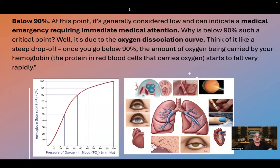Below 90% is generally considered low and can indicate a medical emergency requiring immediate medical attention. Why is below 90% such a critical point? It's due to the oxygen dissociation curve, which is S-shaped. Think of it like a steep drop-off — once you go below 90%, the amount of oxygen being carried by your hemoglobin, the protein in red blood cells that carries oxygen, starts to fall very rapidly. On the vertical axis, a saturation of 90% corresponds to a partial pressure of oxygen of 60, down from 100.